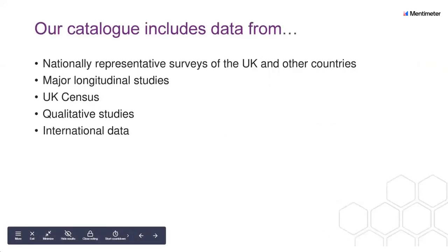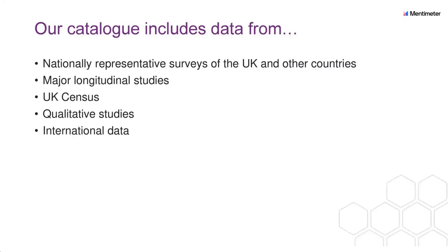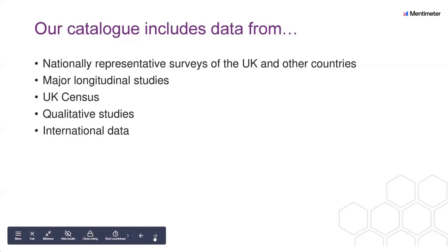We have a very large data catalogue with a wide range of data. The main types include data from nationally representative surveys of the UK and some from other countries, data from major longitudinal studies following individuals over time, data from the UK census, and data from qualitative studies such as interview transcripts from research projects. We also have international data, often time series data from organisations such as the World Bank. There's a big variety of data in our catalogue.